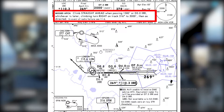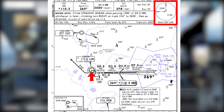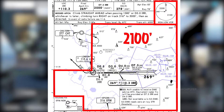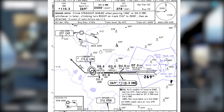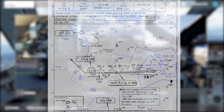The missed approach procedure is: climb straight ahead when passing 1,580 feet or passing zero miles India Romeo Romeo — whichever is later — then climbing turn right on track 316° to 3,000 feet, then as directed. In the event of radio failure, refer to the STAR chart. So 3,000 feet is the altitude we set once the glideslope is captured. The minimum sector altitude refers to the Lima Oscar November VOR — London VOR. Our approach today passes through the 2,100 and 2,200 feet segments. That covers the ILS chart. I'll now position the aircraft tracking to 7.5 miles India Romeo Romeo, the final approach fix, maintaining 2,500 feet.